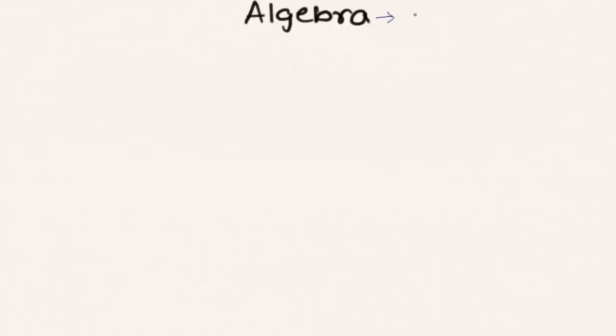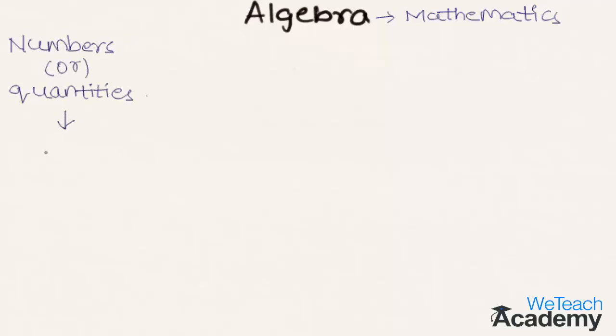Algebra is considered the most important branch of mathematics. In algebra we represent numbers or quantities with letters called literal numbers. The literal numbers used to represent numbers and quantities are called literals, and the process of computing the literals is called algebra.